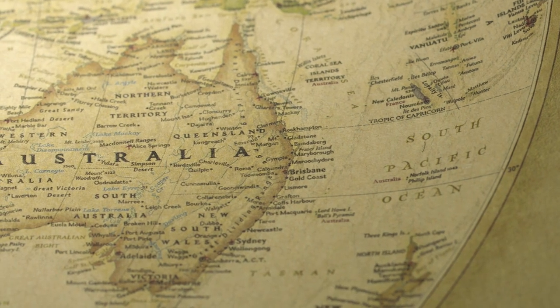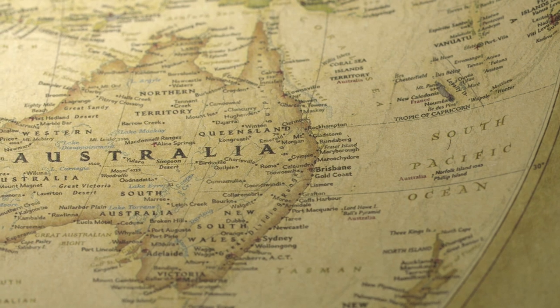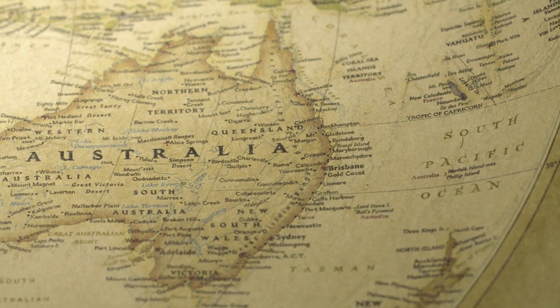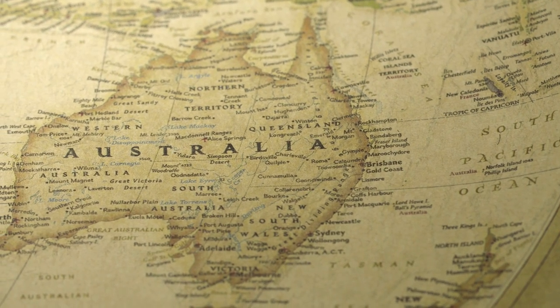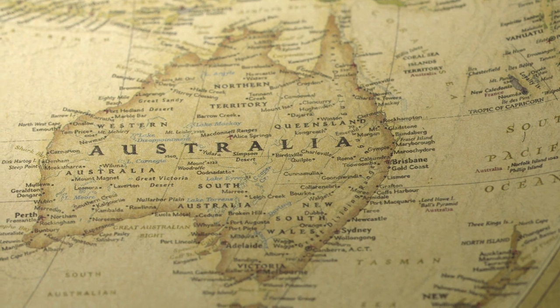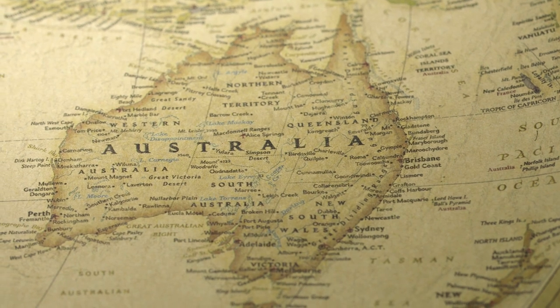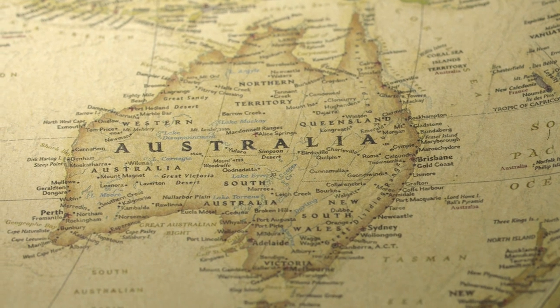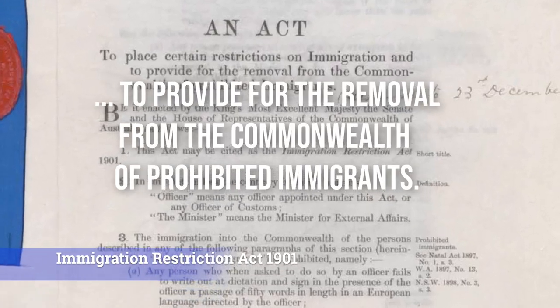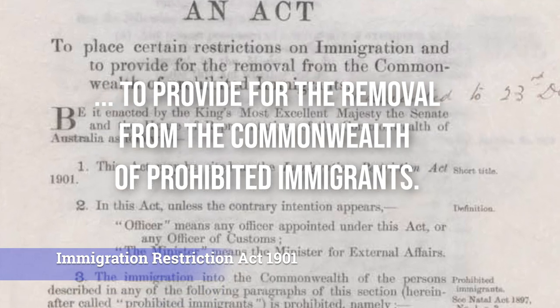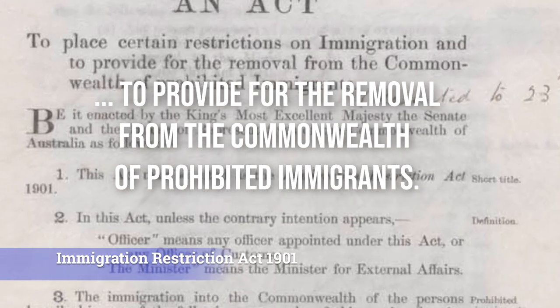In 1901, the six self-governing British colonies united and formed the Commonwealth of Australia. One of the first bills introduced by the new federal parliament was the Immigration Restriction Act 1901. The act sought to exclude all non-Europeans from Australia, and it formed the basis of the White Australia Policy.